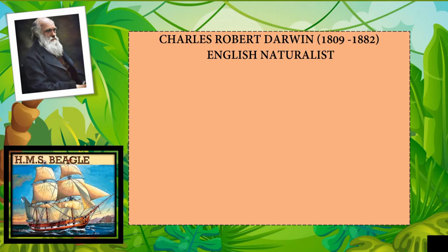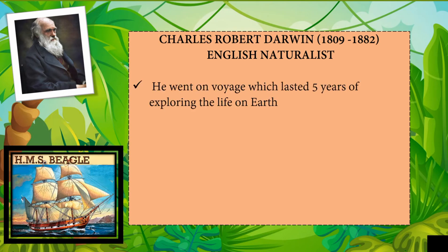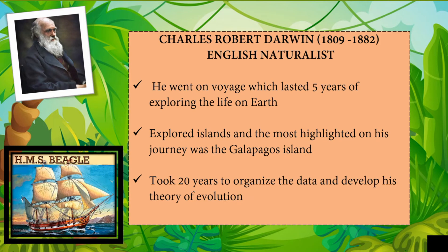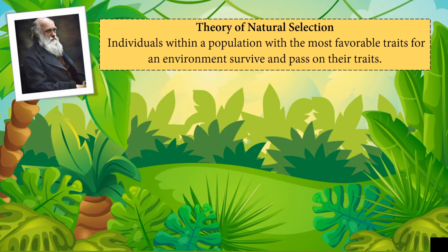This is Charles Robert Darwin. He was an English naturalist who went on a voyage that lasted five years, exploring the life on Earth. He explored many islands, and the most highlighted on his journey was the Galápagos Islands. It took him 20 years to organize the data and develop his theory of evolution. The theory of natural selection means that individuals within a population with the most favorable traits for an environment survive and pass on those traits.